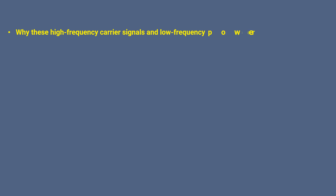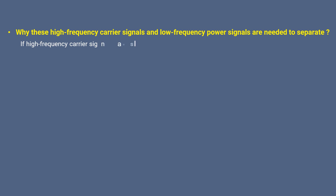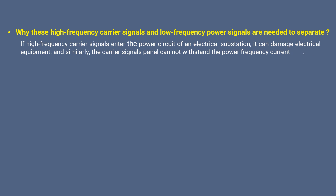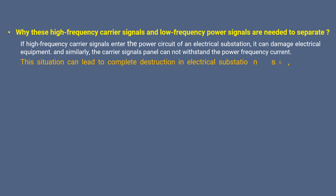Why do these high frequency carrier signals and low frequency power signals need to be separated? If high frequency carrier signals enter the power circuit of an electrical substation, it can damage electrical equipment. Similarly, the carrier signal panel cannot withstand the power frequency current. This situation can lead to complete destruction in an electrical substation and subsequently in the power system.